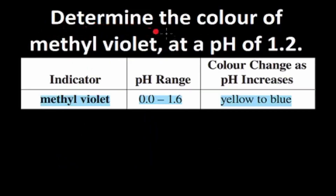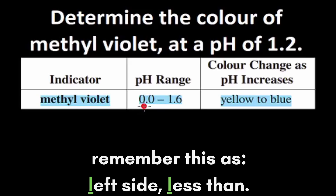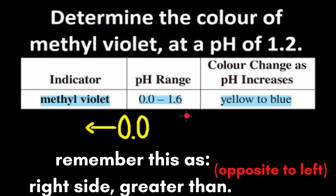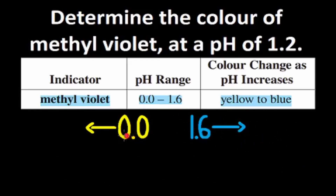Let's try this one. Determine the color of methyl violet at a pH of 1.2. This is the information we have for our indicator. The pH range is 0.0 to 1.6, and the color change as pH increases is yellow to blue. Let's treat this dash and this 2 as a middle line, so 0.0 and yellow would be on the left side, while 1.6 and blue would be on the right side. Since 0.0 and yellow are both on the left side, that means all pHs less than 0.0 will be yellow. 1.6 and blue are on the right side, so all pHs greater than 1.6 will be blue. And pHs between 0.0 and 1.6 will be a mix of yellow and blue, that gets us green.